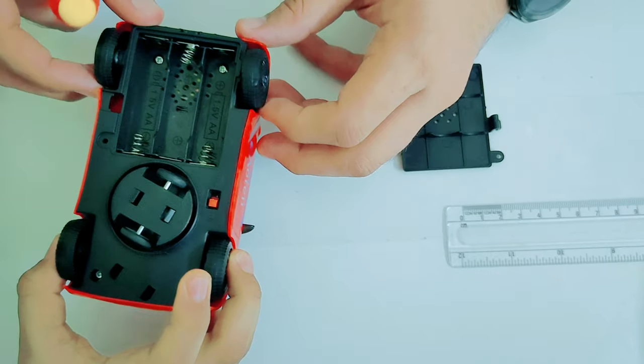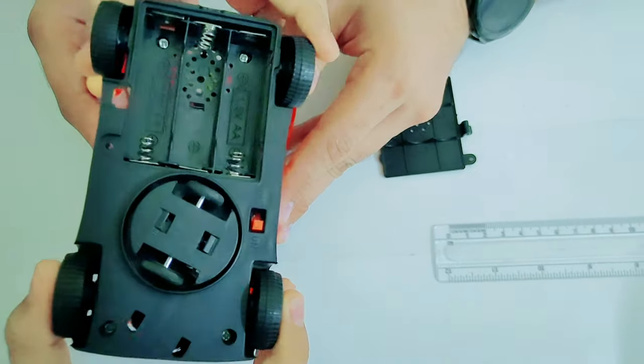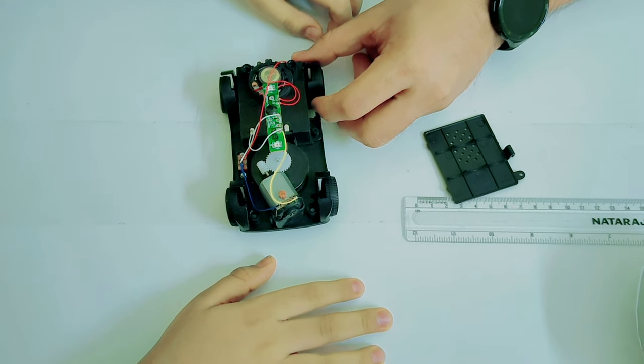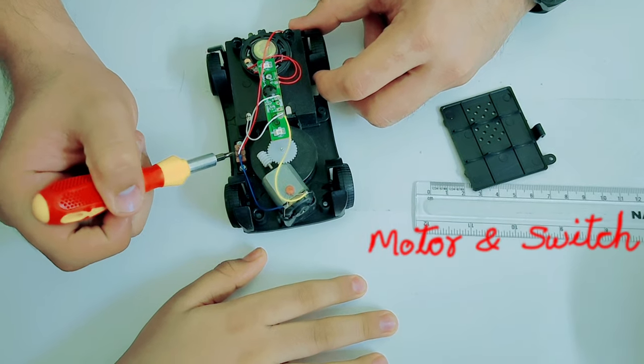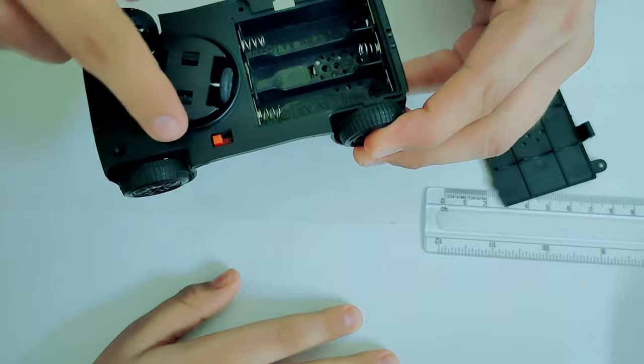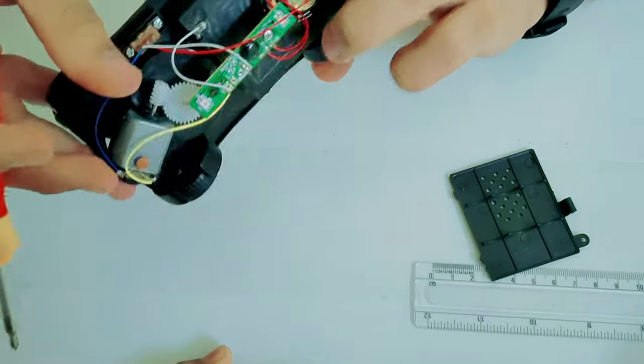Once we have opened all four screws, they should pop out. Ayaan, pull it up, pull it out. Once you have opened your toy, you will find two things which you would need. One is this motor. The second is a switch right here. You see, this switch usually is for turning the toy on and off. You will require this switch and you will require the motor.